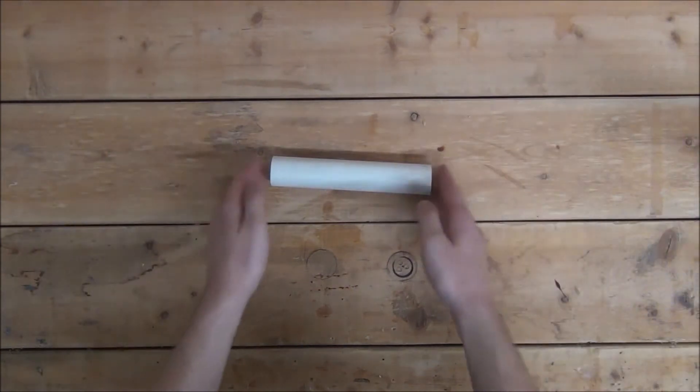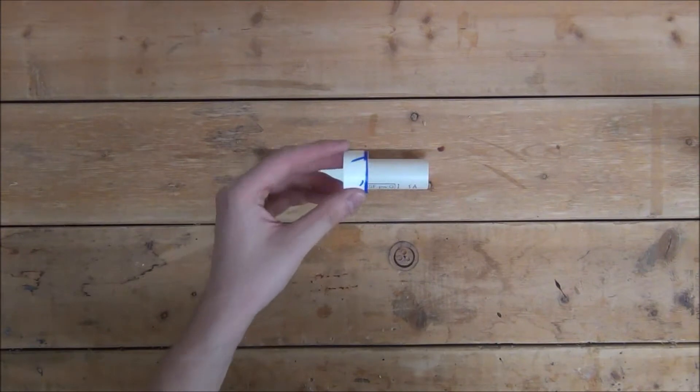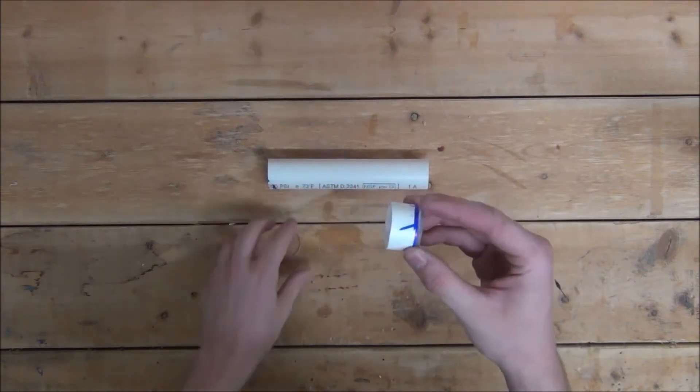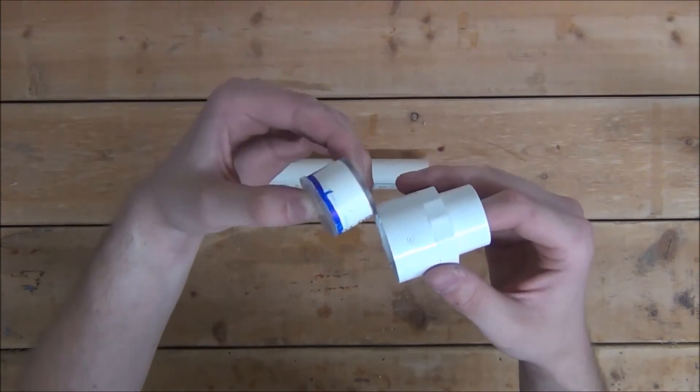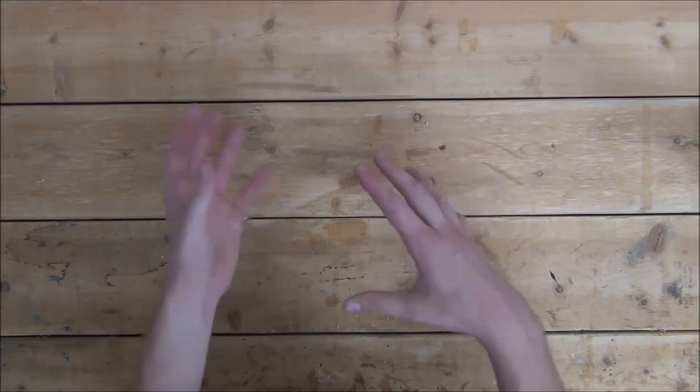Next, we'll want to cut a section out of our 1-inch pipe that will sit in between the two Lexan pieces. We'll want to cut it just wide enough so that both it and the two Lexan pieces can seamlessly slide into the female end of the adapter. For me, that's about three quarters of an inch. But we don't want to slide it in just yet. There's a few things we need to do before that.